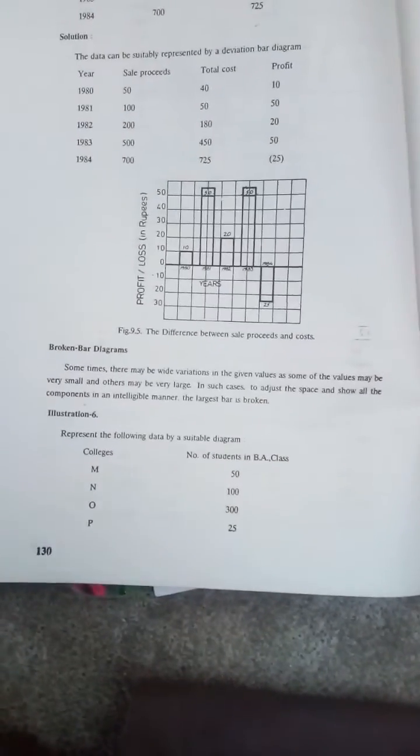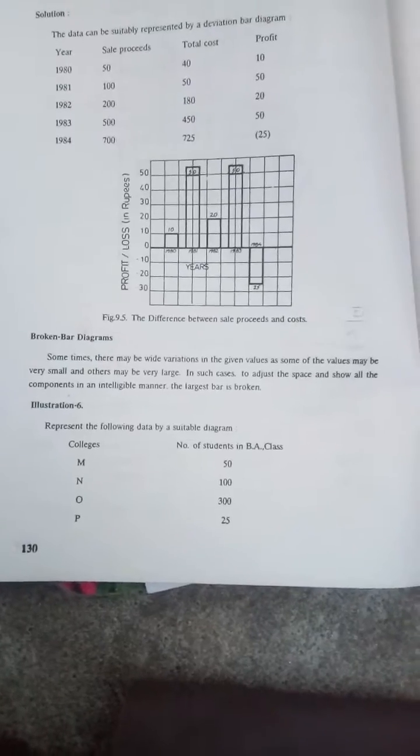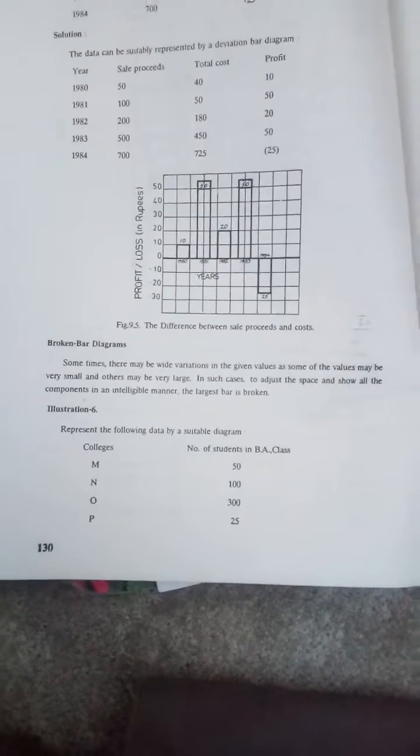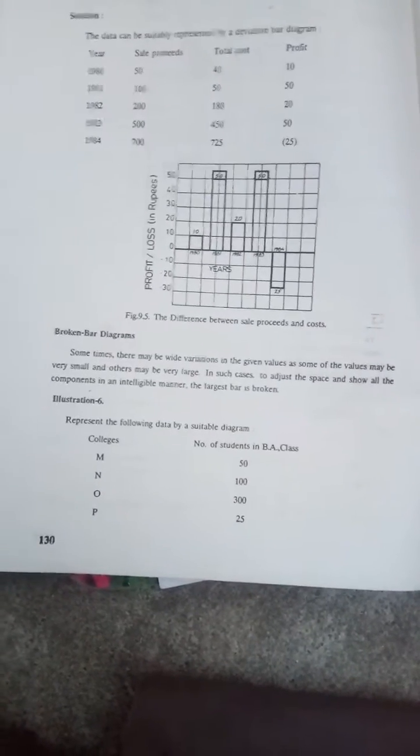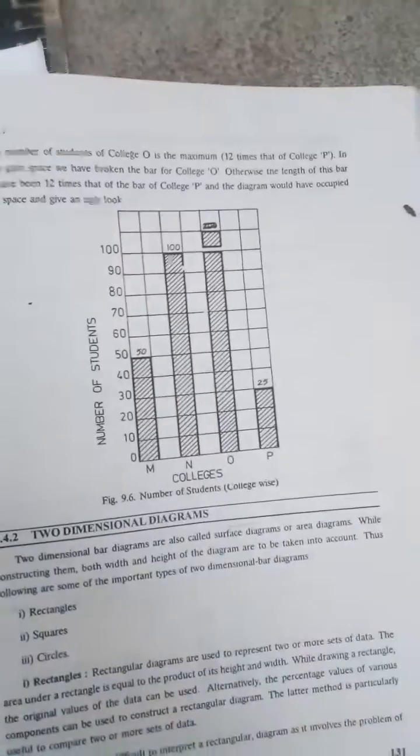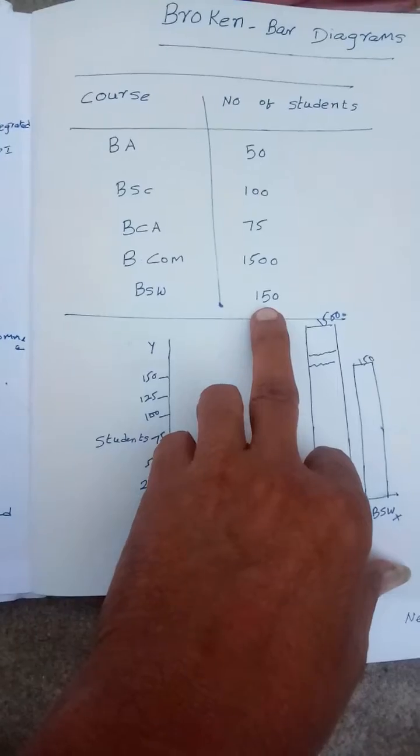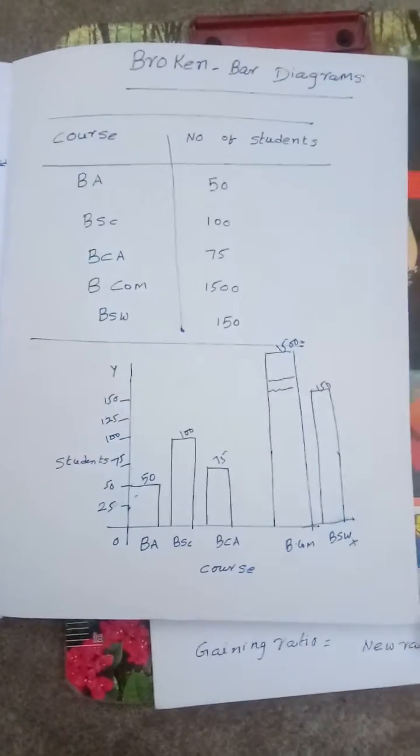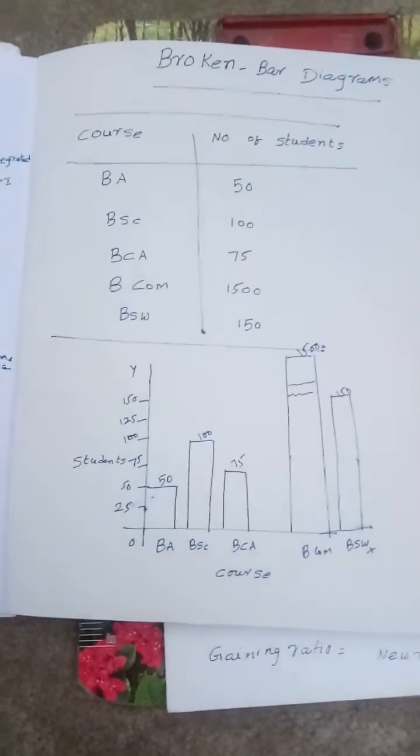My dear students, thank you for asking me. If something is not clear you can ask me, no problem. Hope you understood this: when there is a variation between the smallest and the largest number, we have to use broken bar diagram. Broken means it is breaking up to the next highest. Likewise here also, 150 is BSW highest but B.Com is 1500. When there is a huge gap between the smallest one and the biggest one, we can use broken bar diagram.